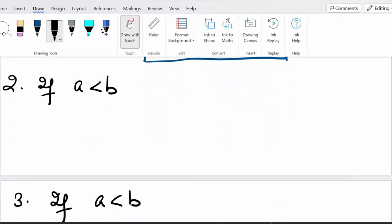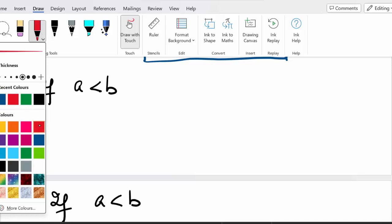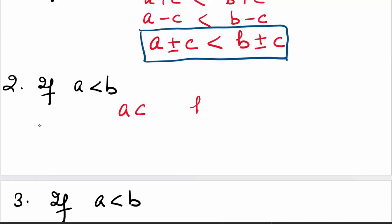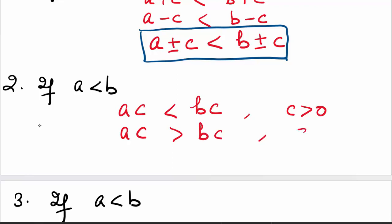Come to the second rule. If we multiply by C on both the sides, A times C compared to B times C: the inequality will not change provided C is positive. And the inequality changes on multiplying by C if C is negative. So C greater than 0 means C is positive; C less than 0 means C is negative, and the inequality will accordingly change.